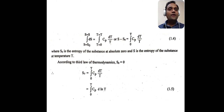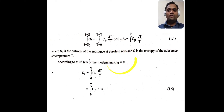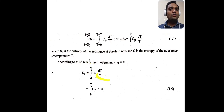According to the third law of thermodynamics, S₀ = 0 — the entropy of a perfectly crystalline solid is zero. Therefore only Sₜ remains, giving us Sₜ = ∫₀ᵀ Cp dT / T = ∫₀ᵀ Cp d(ln T). This is equation 3.